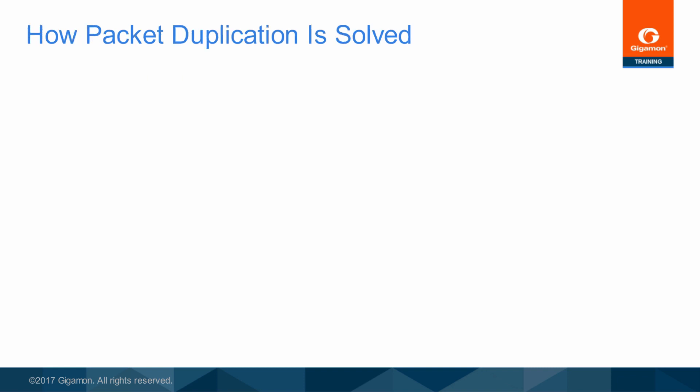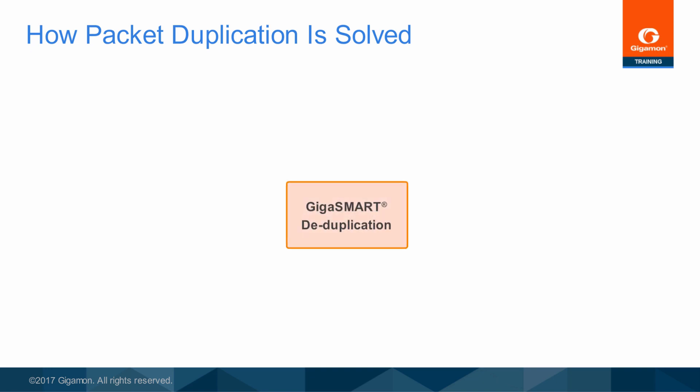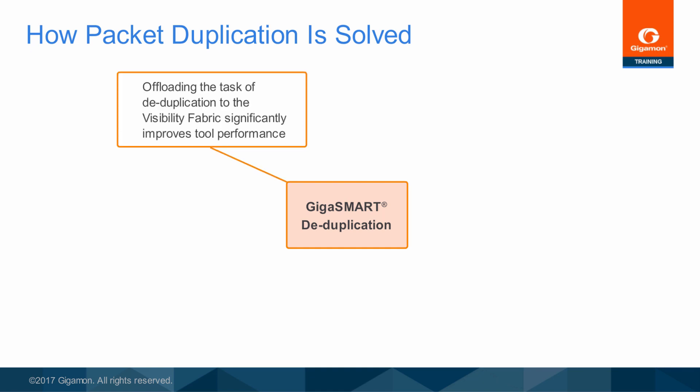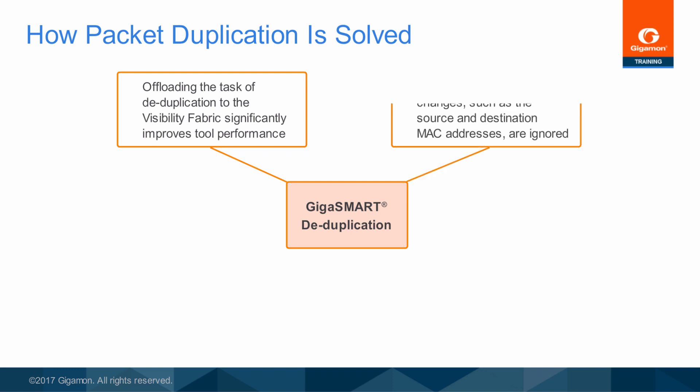So what's the solution to the problems caused by duplicate packets? The Gigamon GigaSmart deduplication application is the answer. Today's network is forwarding traffic at much higher rates than most analyzers can easily handle, especially when multiple links are aggregated. Tuning the traffic stream so that only the correct traffic is analyzed helps your monitoring systems keep up with the increased traffic. The GigaSmart deduplication application takes into consideration those fields which are expected to change as a packet moves through a network, such as the source and destination MAC addresses.